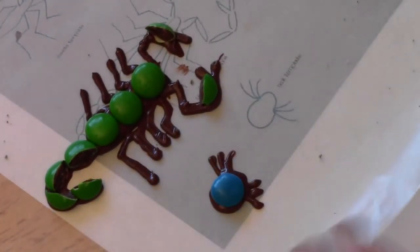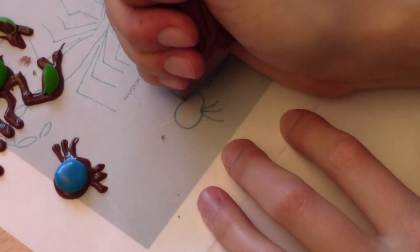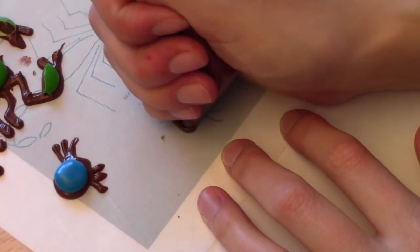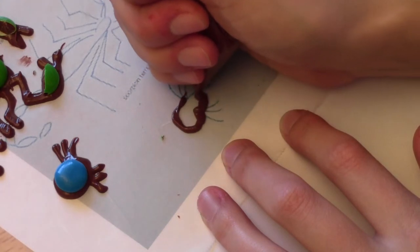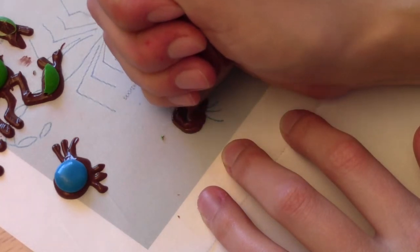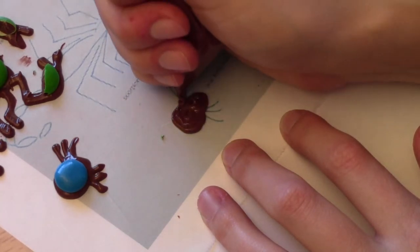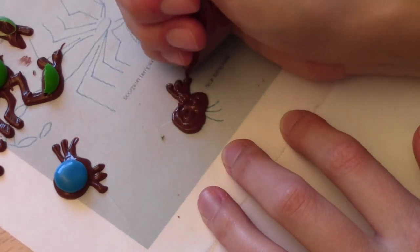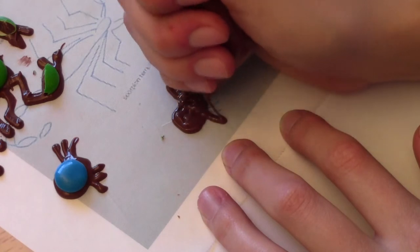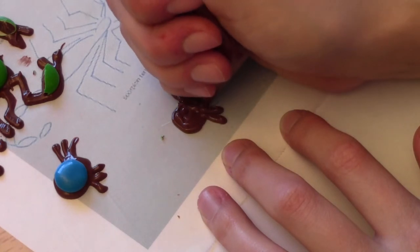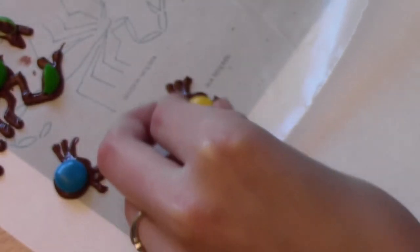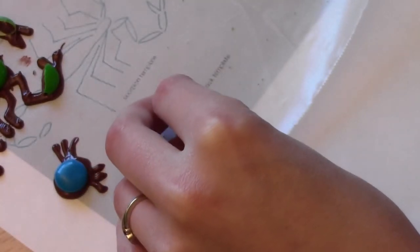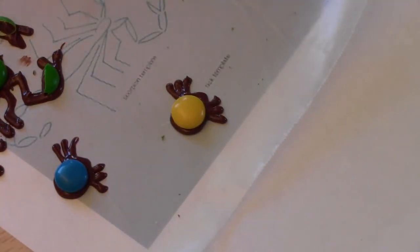And we can move this aside and make another one. And we'll make him a yellow one. So there's a few different kinds of bugs.